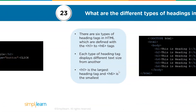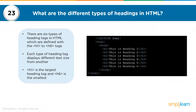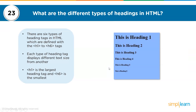The twenty-third question: what are the different types of headings in HTML? There are six types of heading tags in HTML, defined with h1 to h6 tags. Each heading tag displays a different text size, where h1 is the largest and h6 is the smallest. On the right-hand part of the screen you can see the implementation from h1 to h6, with h1 being the biggest and h6 being the smallest.